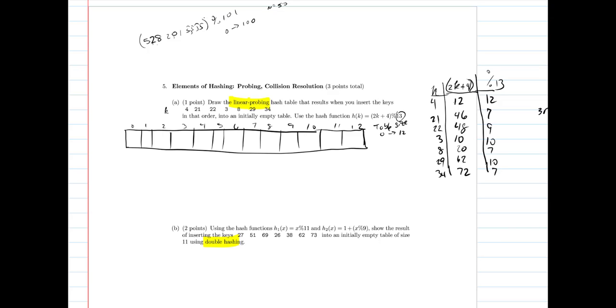Okay, so my array looks like that. Now the key here, 4, maps into position 12.